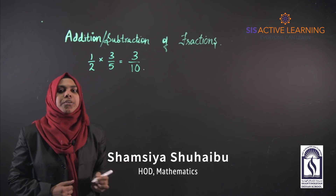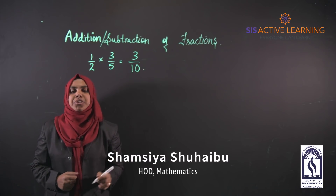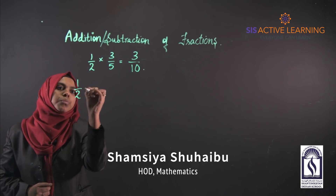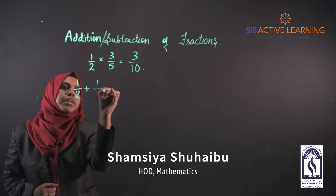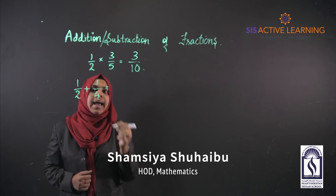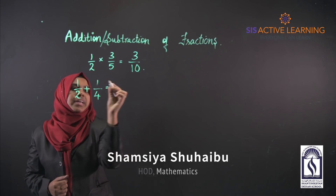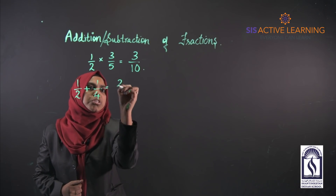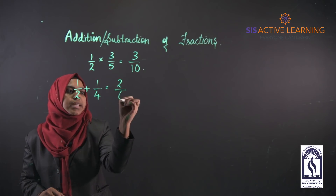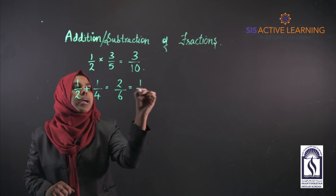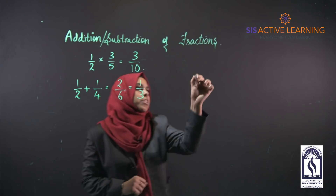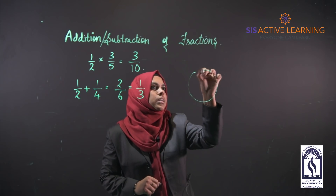Now we will take the case for addition or subtraction: 1/2 + 1/4. If we do the same process — adding numerators, that is 1 + 1 = 2, and denominators 2 + 4 = 6 — we get 2/6, which simplifies to 1/3. But that is wrong.